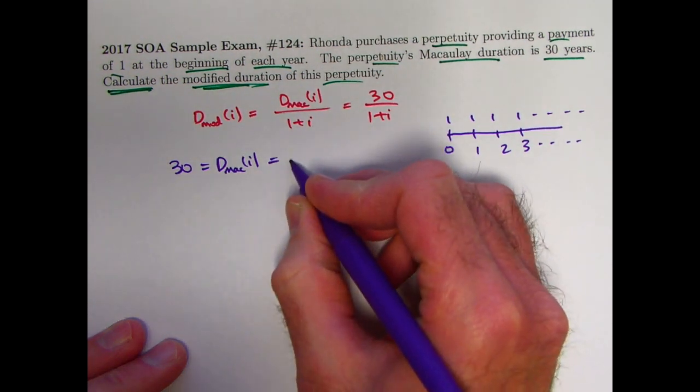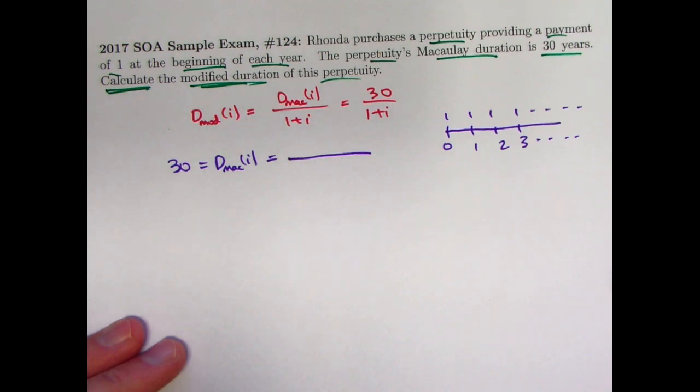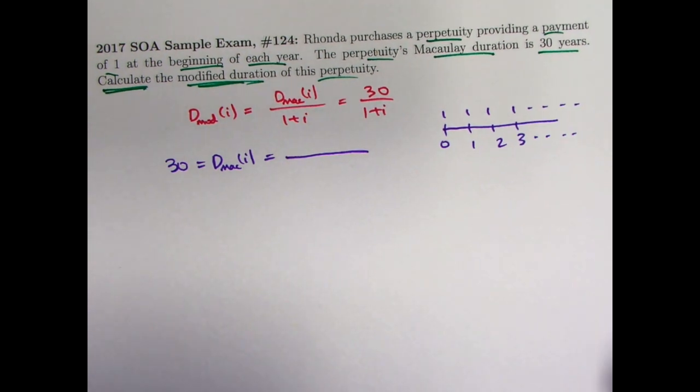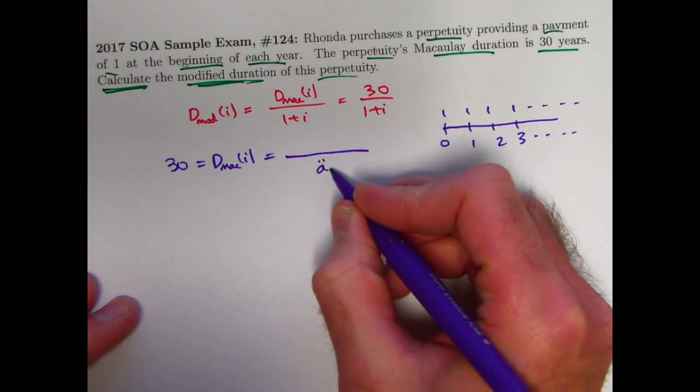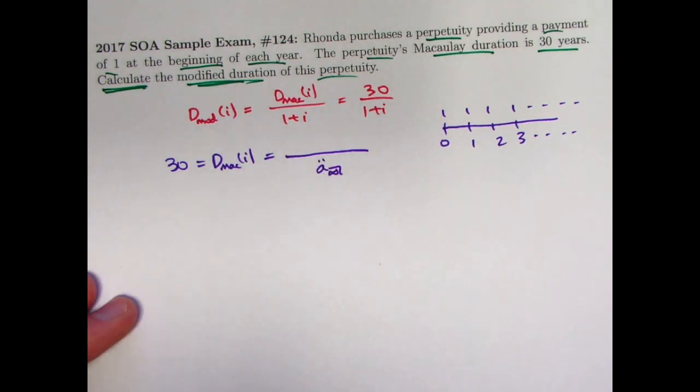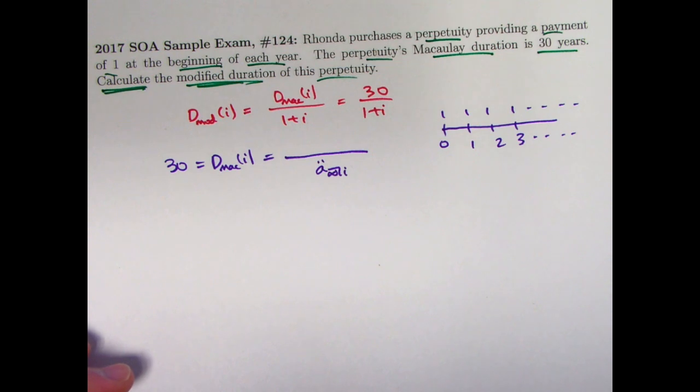And we know, well, the Macaulay duration is a ratio where the bottom of the ratio is definitely the present value of this series of payments. It's what it's worth. You could represent that as A double dot sub infinity. A double dot because it's an annuity due. The payments start right away at time 0 at the unspecified interest rate i.